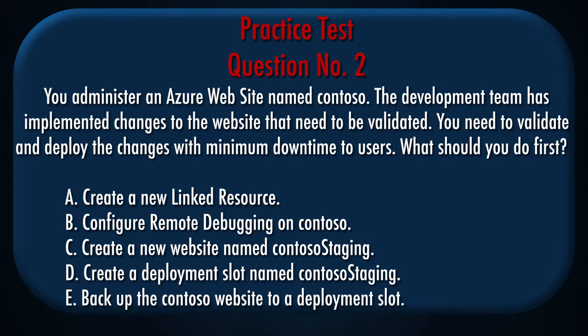A. Create a new linked resource. B. Configure remote debugging on Contoso. C. Create a new website named Contoso Staging. D. Create a deployment slot named Contoso Staging.